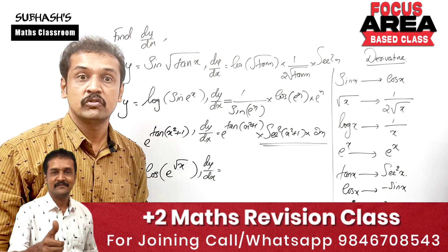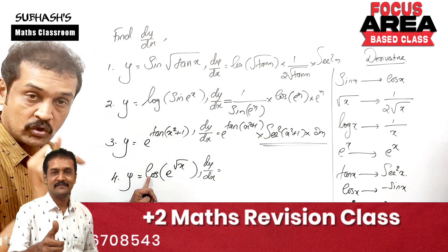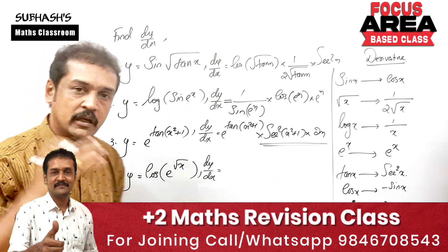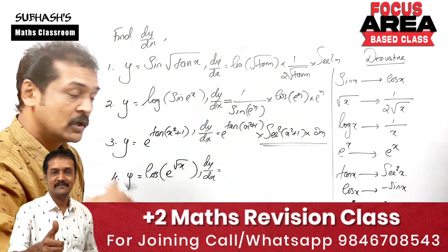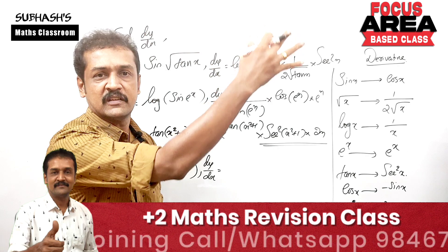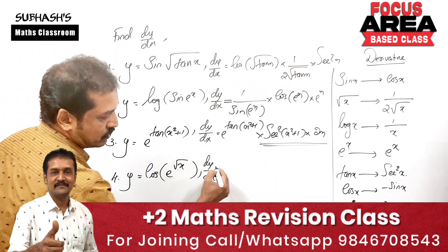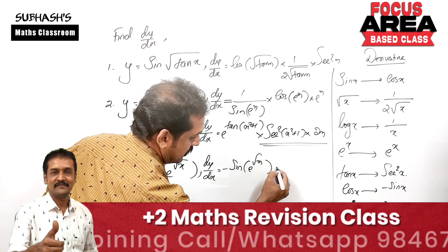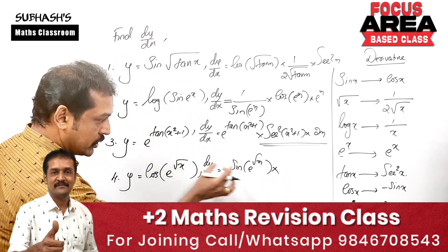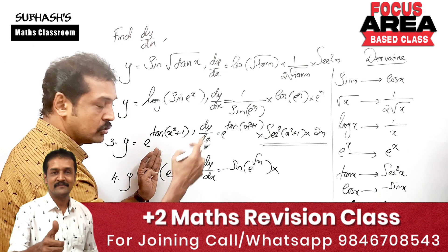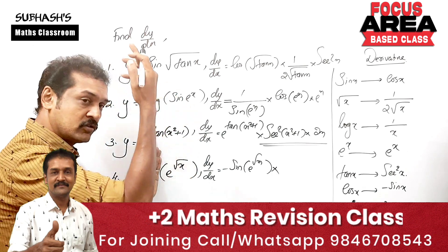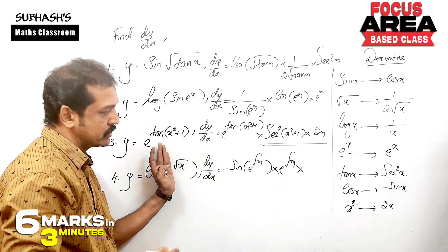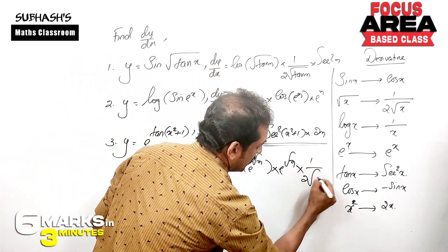Next: cos of e^(√x). Starting from cos — the derivative of cos is minus sine. So we get minus sine of e^(√x), then e^(√x), then the derivative of root x is 1 by 2 root x.